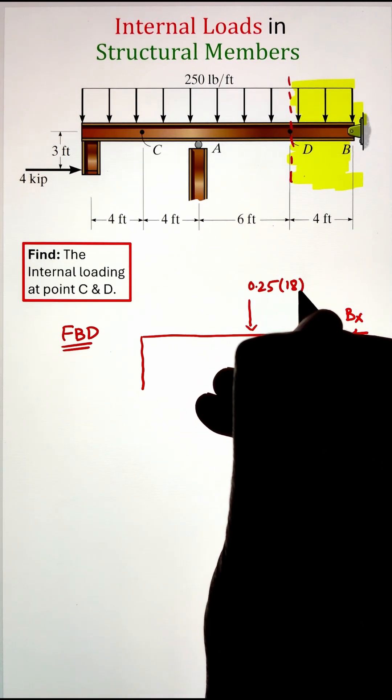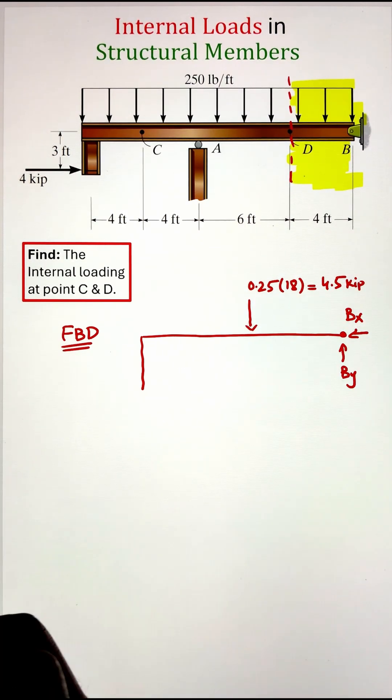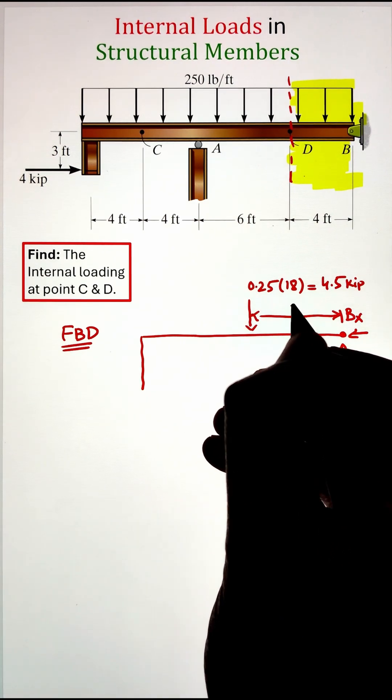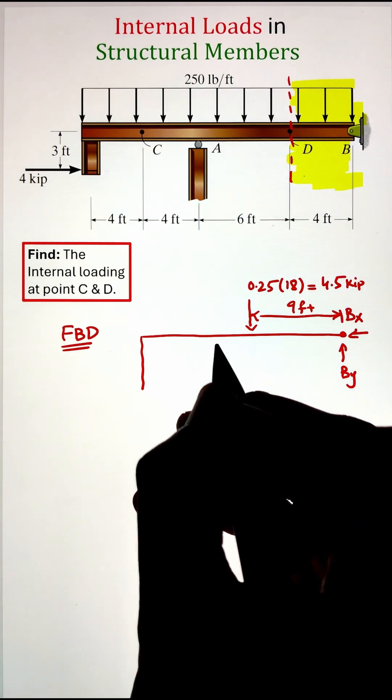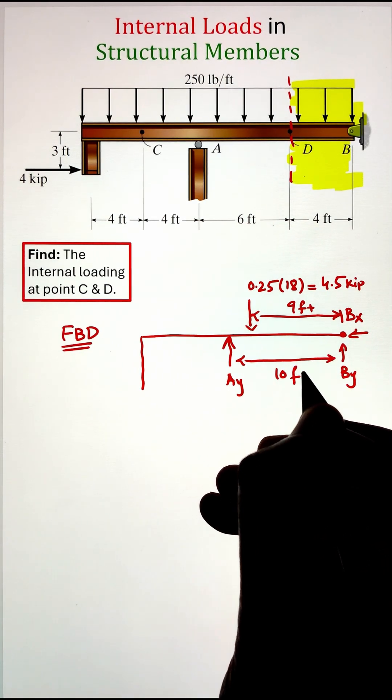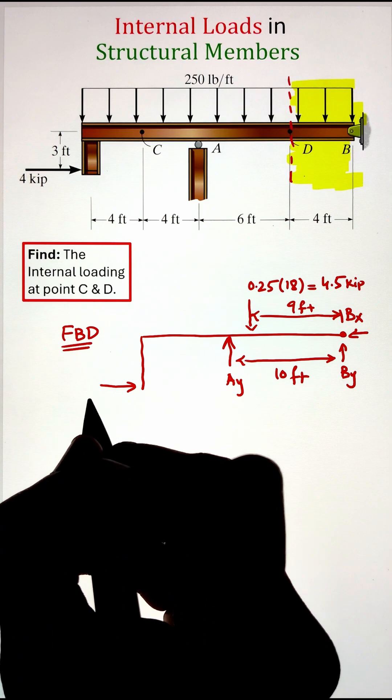Here we have a rectangular distributive load of 250 pounds per foot that can be converted into a point load by multiplying it with the 18-foot span of the beam, that is 4.5 kilopounds. Next I have a roller at point A that will have vertical support reaction, and finally we have an external load of 4 kilopounds in the horizontal direction.